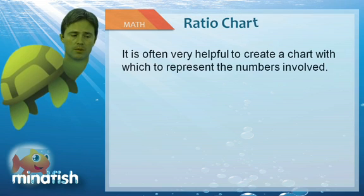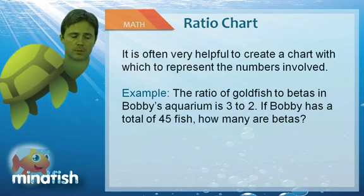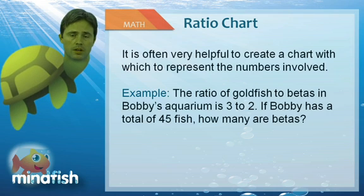So it's often helpful to create a chart to represent the numbers involved. So an example here, we say the ratio of goldfish to betas in Bobby's aquarium is 3 to 2. If Bobby has a total of 45 fish, how many are betas? So again, what we're going to do here is find the missing total. In this case it's 5.